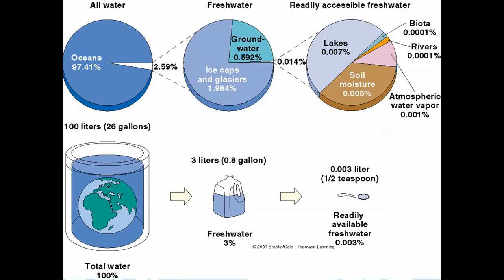Let's take a look at our water budget on Earth. Almost 97.5% of the water on Earth is found in our oceans — saltwater, non-potable, non-drinking water. So we're only left with a little more than 2.5% as freshwater. Of that 2.5%, over three-fourths is tied up in ice caps and glaciers.